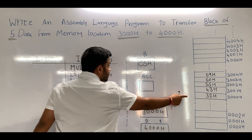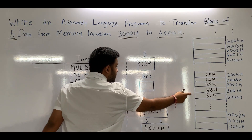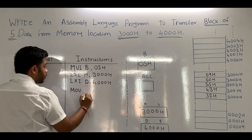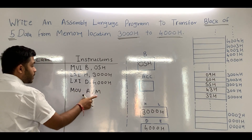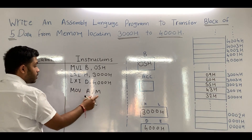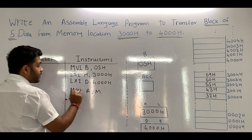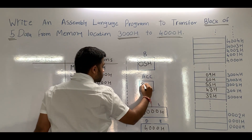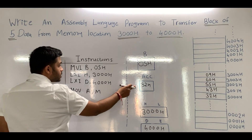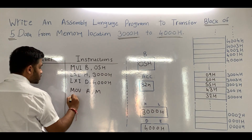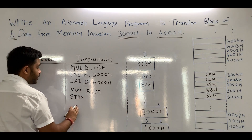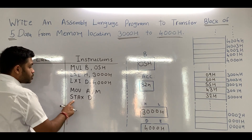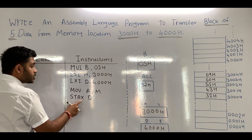Now we have to transfer data from 3000H to 4000H. To transfer data from 3000H to the accumulator, we will use the instruction MOV A, M. MOV A, M means load data to the accumulator from the memory location specified in the HL pair. In the HL pair, 3000H is specified, and in 3000H the data is 32H, so 32H will be transferred to the accumulator. Now we have to move this 32H to 4000H, so we will use the instruction STAX D. STAX D means store data from the accumulator to the memory location specified in the DE pair.